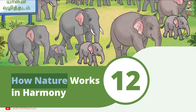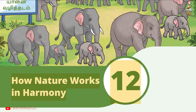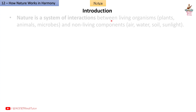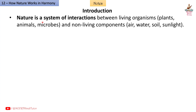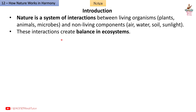Chapter 12: How Nature Works in Harmony. Notes and summary from Grade 8 subject Science book Curiosity. Introduction: nature is a system of interactions between living organisms — plants, animals, microbes — and non-living components: air, water, soil, and sunlight. These interactions create balance in ecosystems.